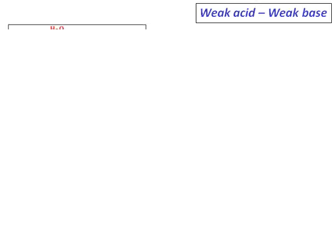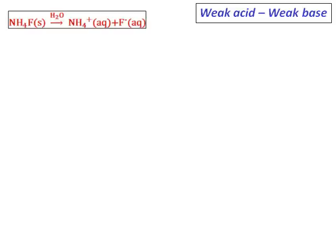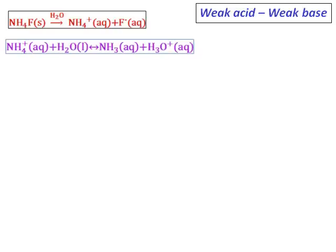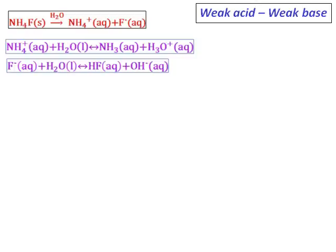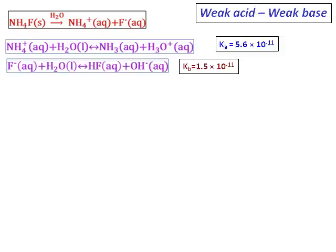The next group is a salt formed from a weak acid and a weak base. In this case, it is possible to get three different kinds of solutions: acidic, neutral, or basic. Take the first example: ammonium fluoride, formed from ammonium hydroxide and HF. When dissolved in water, the ammonium ion reacts with water to give the hydronium ion, and the fluoride ion reacts with water to give the hydroxide ion. To know whether the salt will be acidic or basic, we need to compare ionization constants. The Ka for the ammonium ion reaction is 5.6 × 10⁻¹¹, and the Kb for the fluoride reaction is almost the same, so both reactions are equally favored and ammonium fluoride gives a neutral solution.